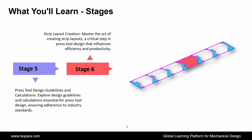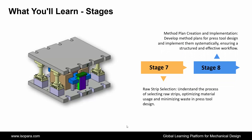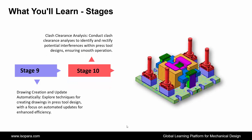Next is Strip layout creation — master the art of creating strip layouts, a critical step in press tool design that influences efficiency and productivity. Next is Raw strip selection — understand the process of selecting raw strips, optimizing material usage, and minimizing waste in press tool design. Next is Method plan creation and implementation — develop method plans for press tool design and implement them systematically, ensuring a structured and effective workflow. Next is Drawing creation and update automatically — explore techniques for creating drawings in press tool design, with a focus on automated updates for enhanced efficiency. Next is Clash clearance analysis — conduct clash clearance analysis to identify and rectify potential interferences within press tool designs, ensuring smooth operation.